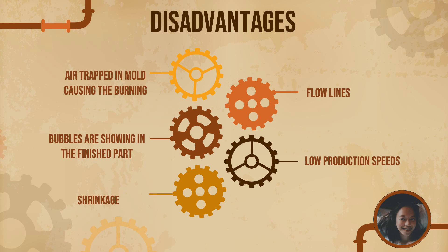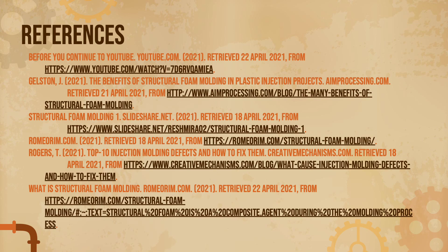Flow lines also occur when the plastic flows through sections with varying wall thickness, or when the injection speed is too low, causing the plastic to solidify at different speeds. Lastly, low production speeds: the process itself takes longer, meaning more time must be invested in producing structural foam molded components. That's all for our report. Thank you for listening.